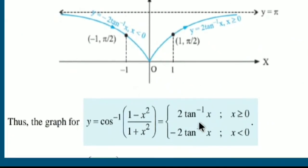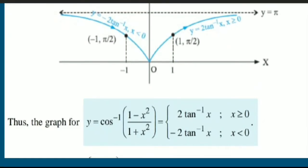Differentiating: for y = 2tan⁻¹(x), dy/dx = 2/(1+x²) > 0 (increasing); for y = −2tan⁻¹(x), dy/dx = −2/(1+x²) < 0 (decreasing). Checking the second derivative for both cases gives a negative result, so concavity is downward throughout. This produces an open-leaf type structure for the graph of y = cos⁻¹((1−x²)/(1+x²)).